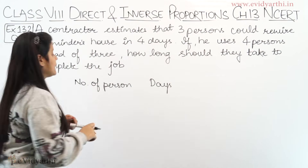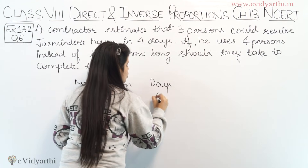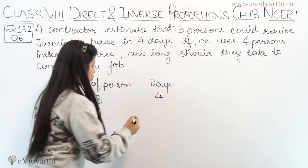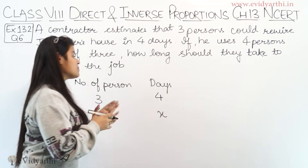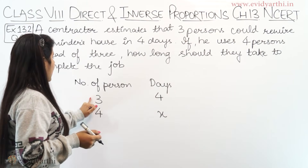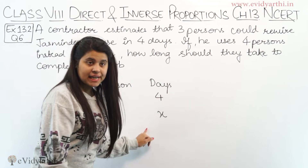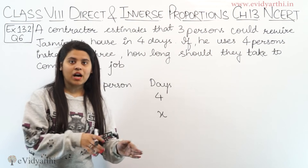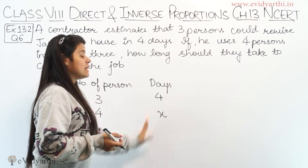We are told that 3 persons work for 4 days. Now, if we use 4 persons, we need to find x days. The key question is: direct proportion or inverse proportion? If we increase the number of people, the days will be reduced. So this is a case of inverse proportion.